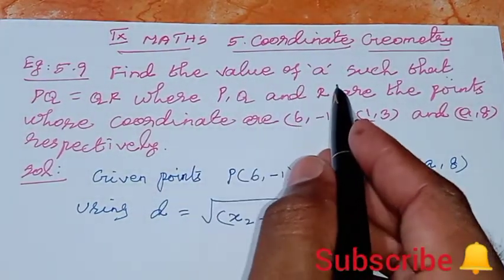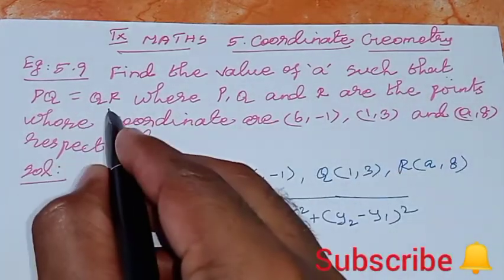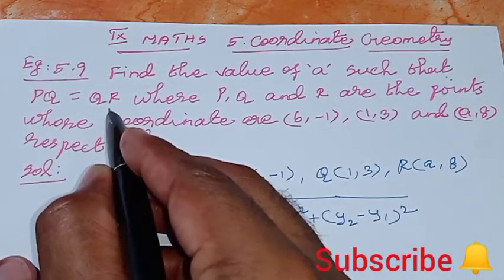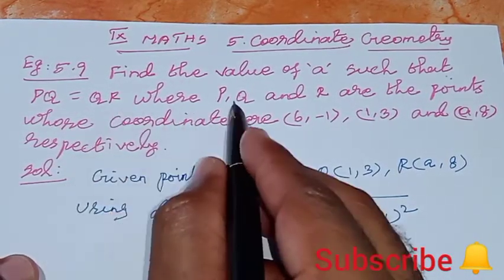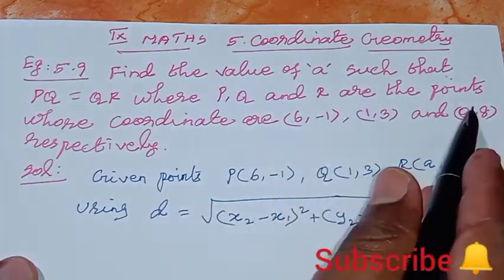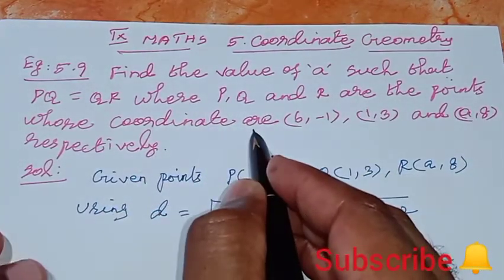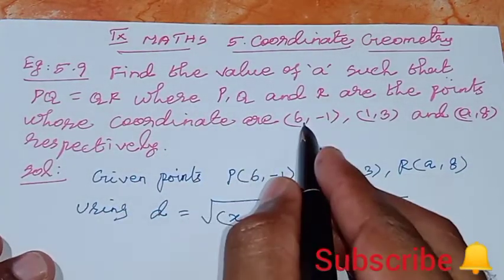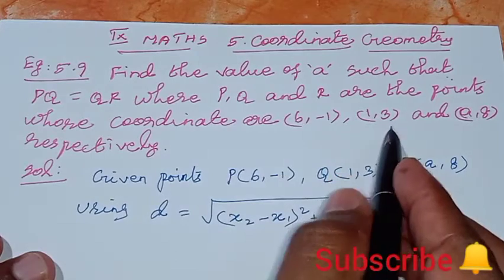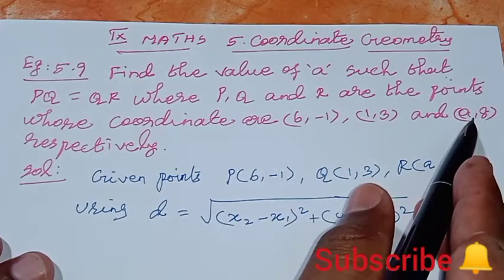See the question: Find the value of A such that PQ equals QR, where P, Q, and R are the points whose coordinates are P(6, -1), Q(1, 3), and R(A, 8).